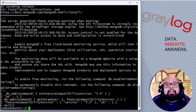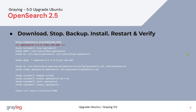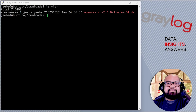For upgrading OpenSearch, we're going to download the package, stop the service, back up the existing config files, install the new 2.5 dev package, restart the service, and verify the service is started. All right, let's move along.